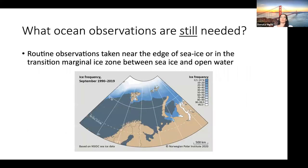Finally, we need many more observations of the marginal ice zone — more observations at the edge of the sea ice to better understand sea ice growth and retreat.